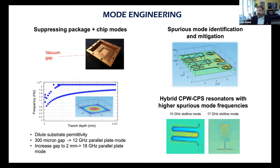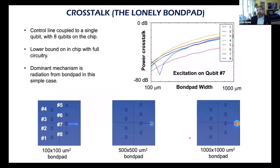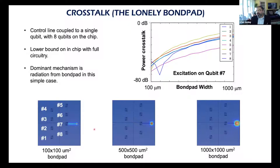One must also engineer proper mode structure. Spurious modes between qubits — even on coupling structures — will reduce coherence. An interesting example is the 'lonely bond pad': in older devices with wire bonding to each pad, if you put an excitation on qubit seven you can ask what power you measure on the others. With a one-millimeter bond pad, you get near-unity crosstalk between devices. You must go much smaller to reduce this, illustrating unique design challenges in quantum devices.